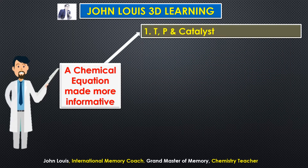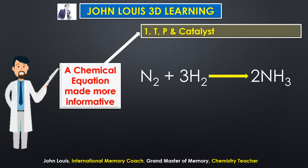Let us take this equation: nitrogen plus hydrogen gives ammonia. Here, the conditions — at what temperature this reaction takes place, what pressure, and what catalyst is used — can all be mentioned above or below the arrow mark.